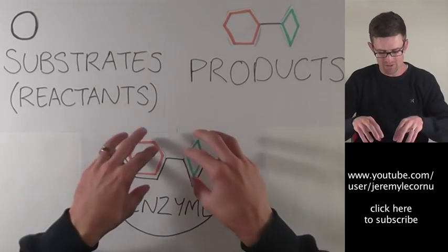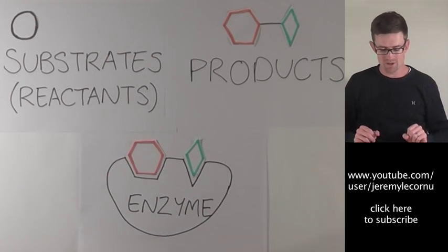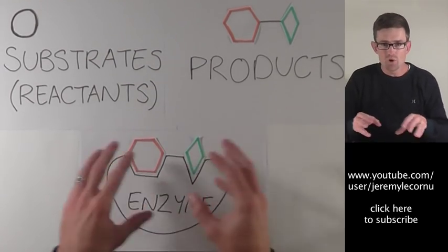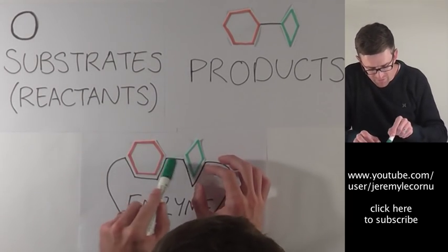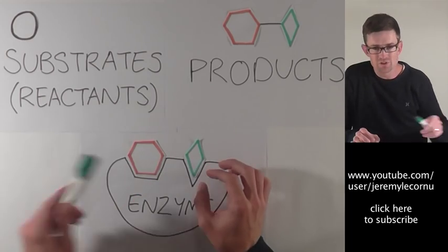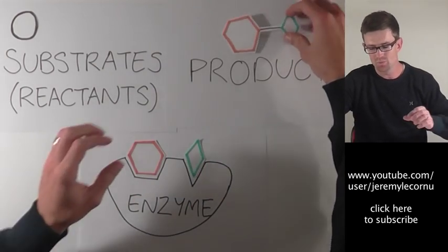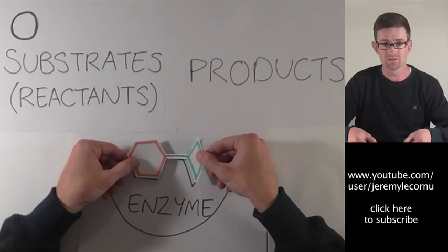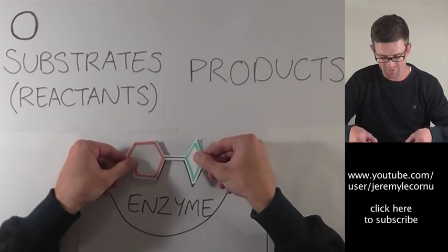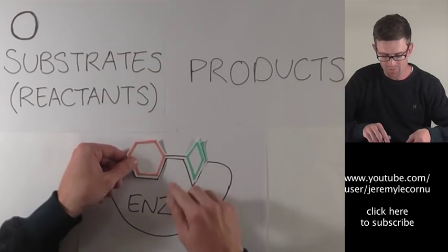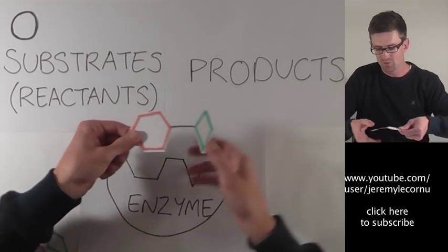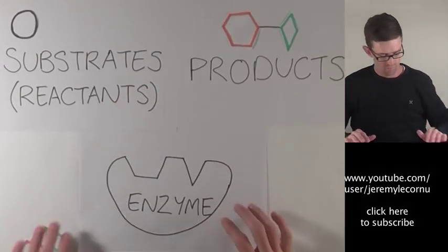So here we go. Substrates are bound to the enzyme. The enzyme helps and provides a location for this reaction to occur. A bond is going to form between these two substrates until we form our product. So there we have it. These two substrates have come in. The enzyme has helped that bond to form and so we've produced our product.